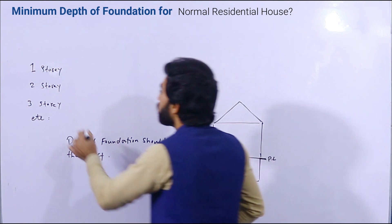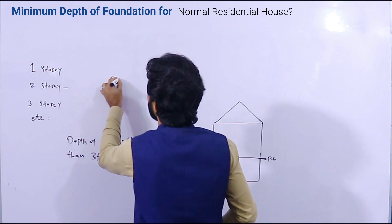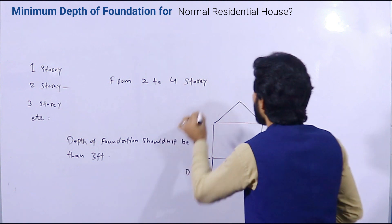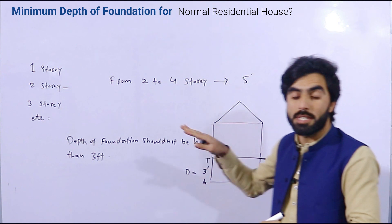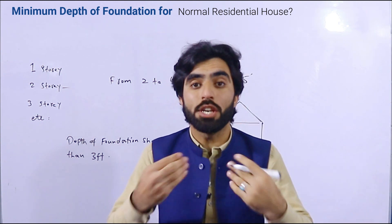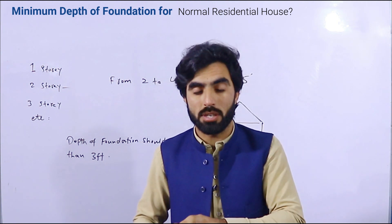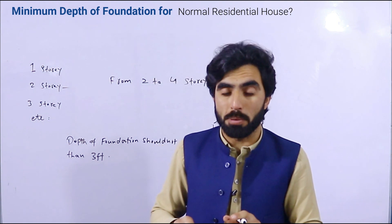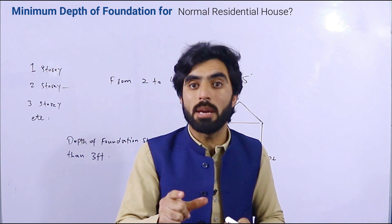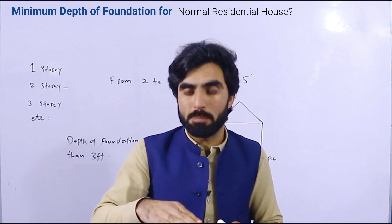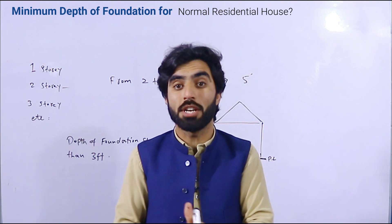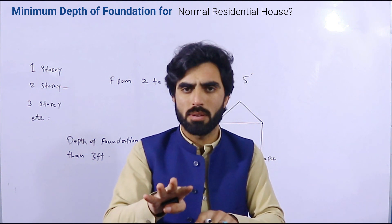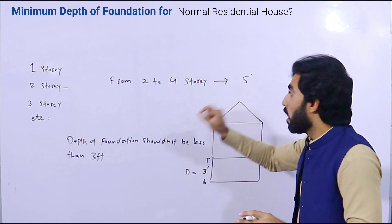From two to four story, it should not be less than five feet. Because if you are uneducated, you don't know what type of soil you are using. You don't know the bearing capacity, you don't know the factor of safety. Therefore, uneducated contractors or laborers should keep maximum depth because they don't know the rules and regulations of civil engineering, the structural design, or the structural load. Therefore, the depth should be increased for normal people.